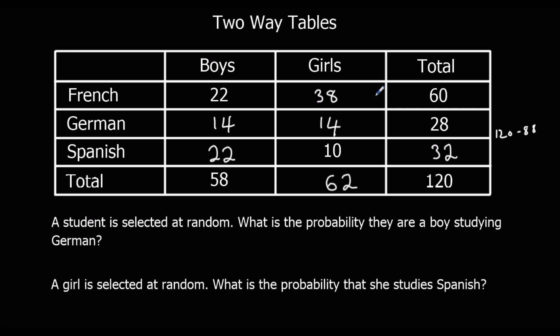Now the questions at the bottom. A student is selected at random — what's the probability they are a boy studying German? A boy studying German is here, so it's 14 out of how many in total. There are 120 people in total, so it's 14 out of 120.